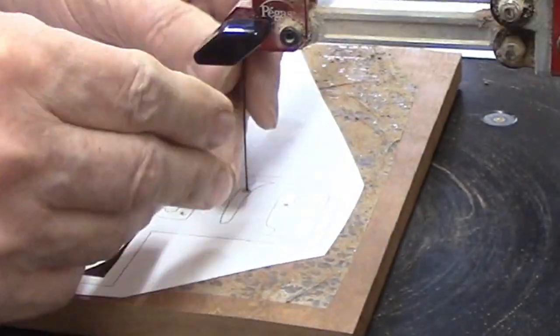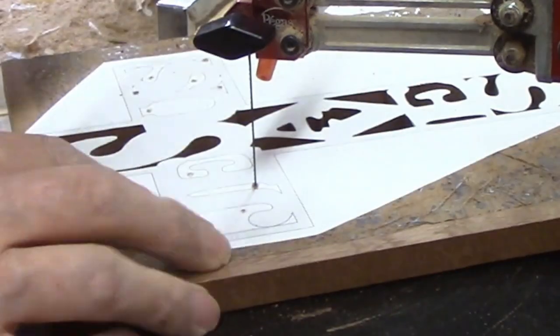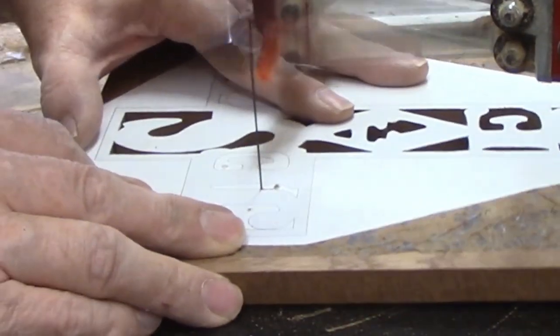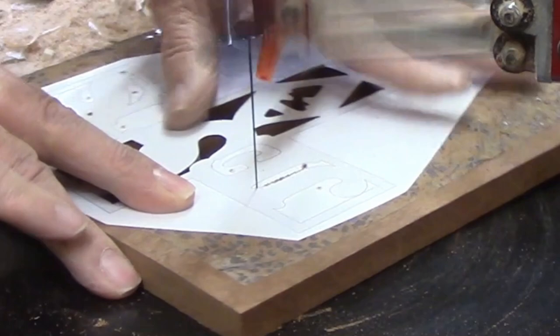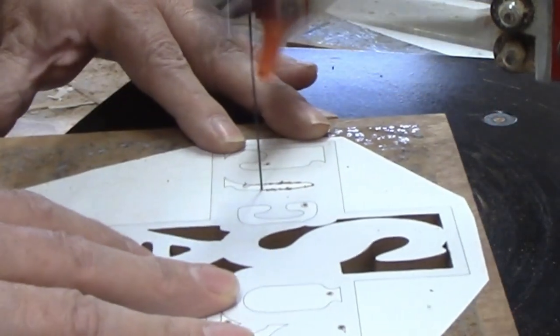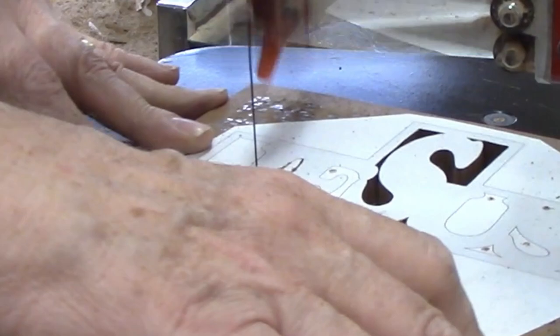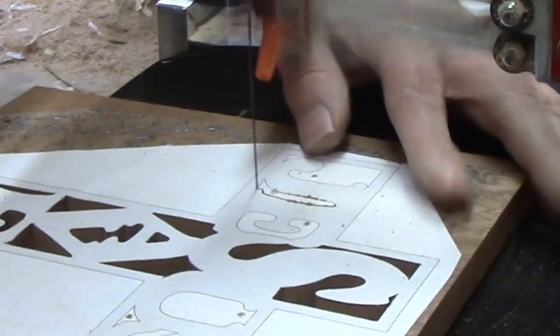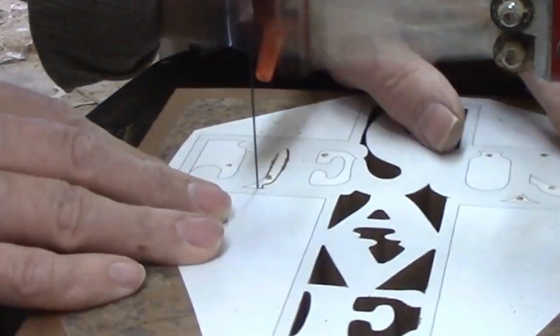Because some of the details on these projects are so small I use a lighted magnifier with my scroll saw. However when I'm recording video I leave the light off because it's so bright that even on the lowest setting it washes out the detail in the picture. I highly recommend using a lighted magnifier.